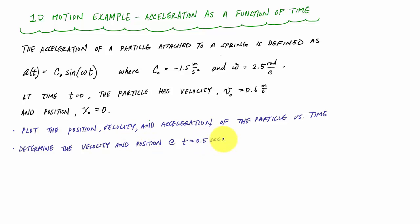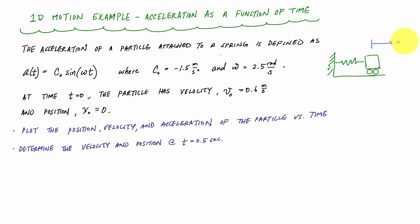We can plug in different values of time to get velocity and position. Here's what something like this might look like. We're talking about a mass connected to a spring — here's a wall, a spring, and a particle on wheels moving back and forth. We define this direction as positive x. We're giving this thing a push to the right and letting it vibrate freely, back and forth, attached to the spring, assuming a frictionless system.